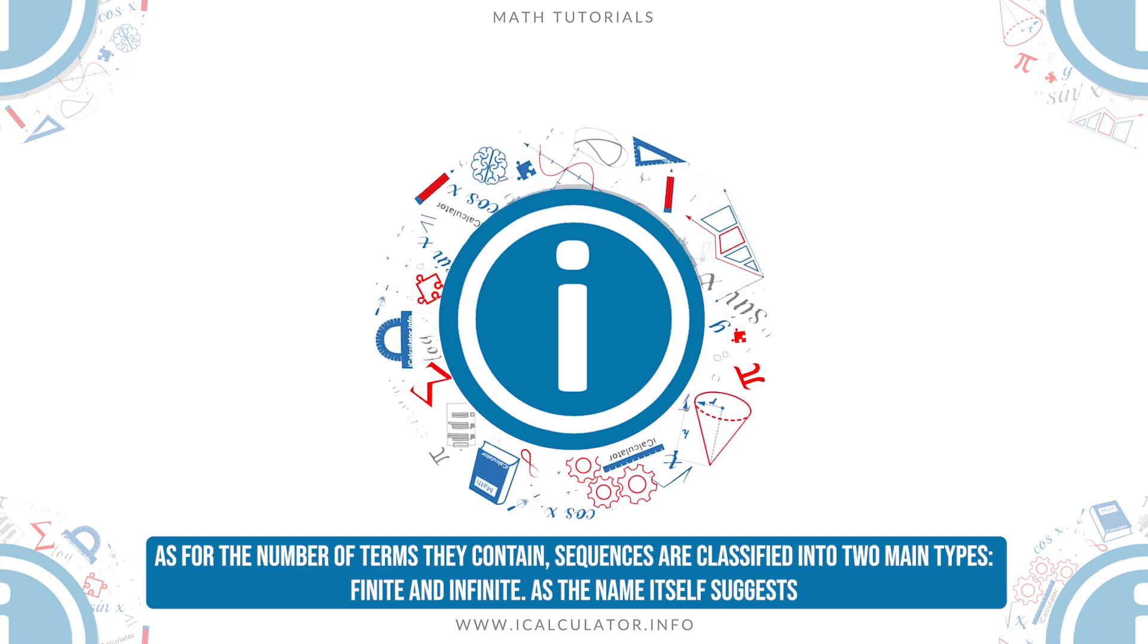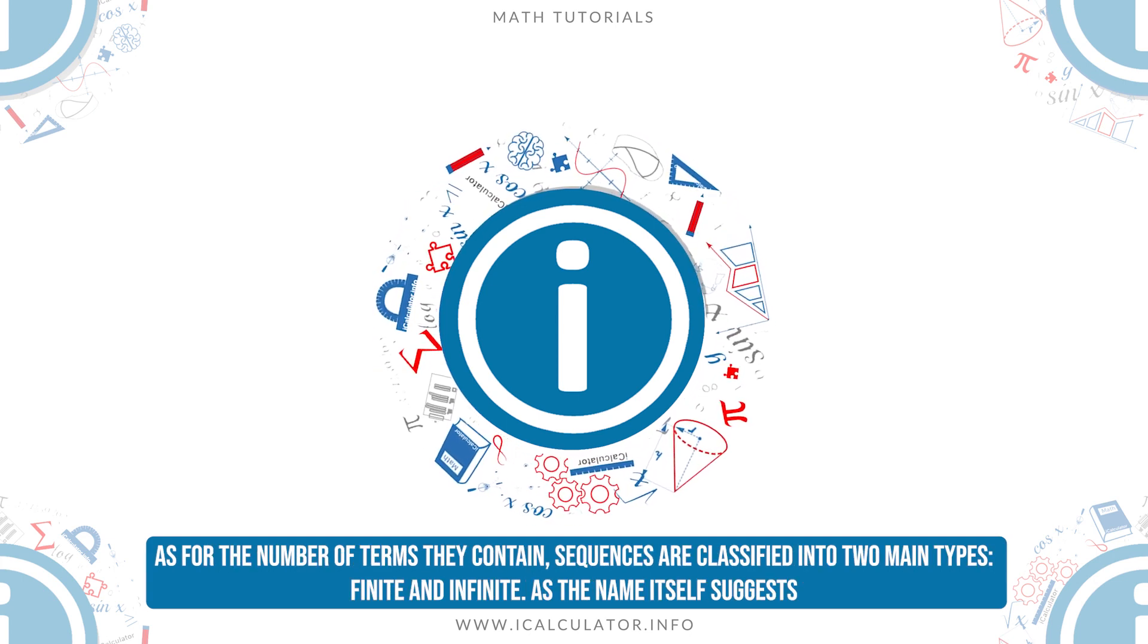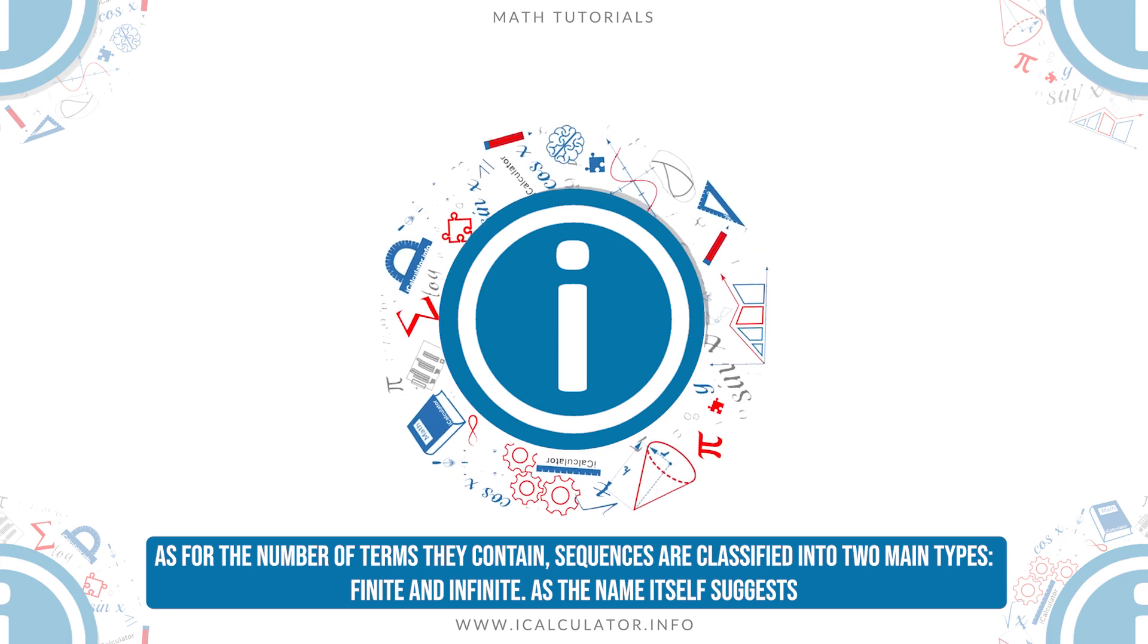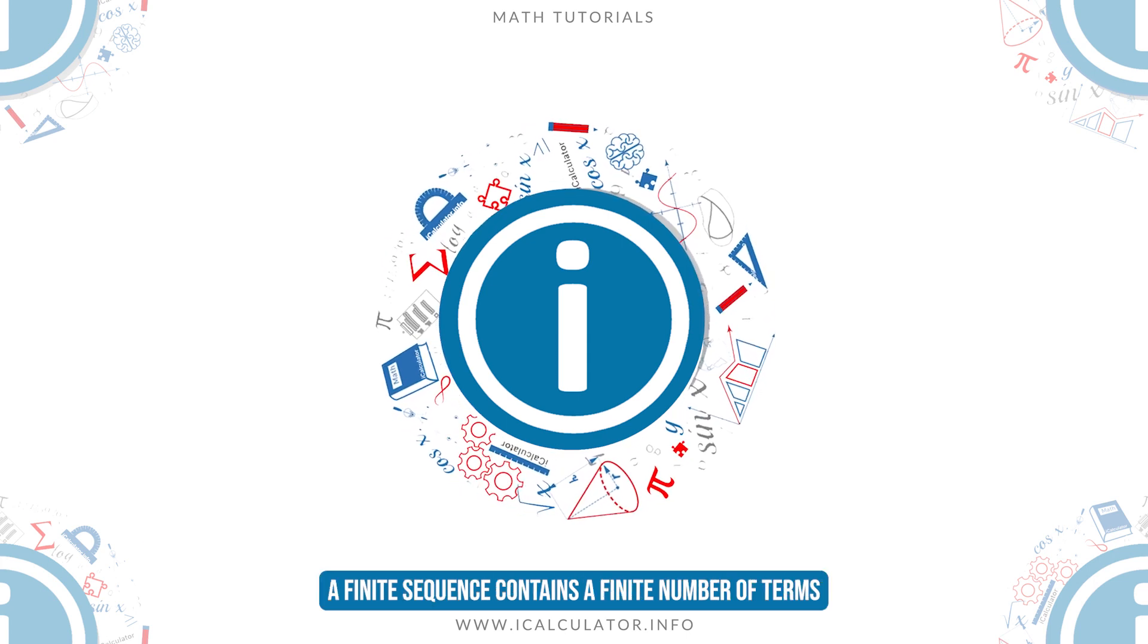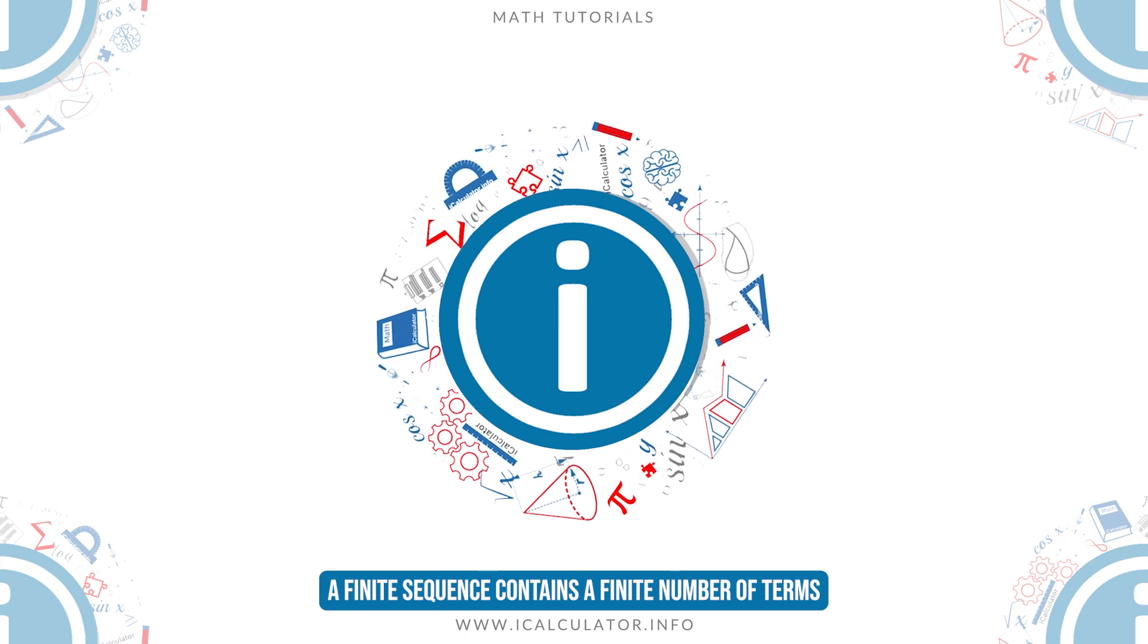As for the number of terms they contain, sequences are classified into two main types: finite and infinite. As the name itself suggests, a finite sequence contains a finite number of terms.